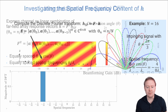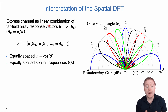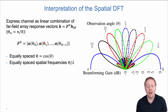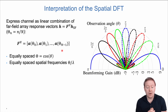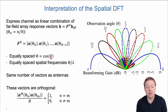In general, we can interpret this spatial DFT as a collection of signal directions equally spaced in the directional cosine domain. Any channel can be written as a linear combination of these far-field array response vectors by taking the inverse DFT of the spatial-frequency representation. We have the same number of vectors as antennas—a one-to-one map—we are simply changing the basis in our vector space. The equally spaced directional cosines ensure that the columns are orthogonal to each other.